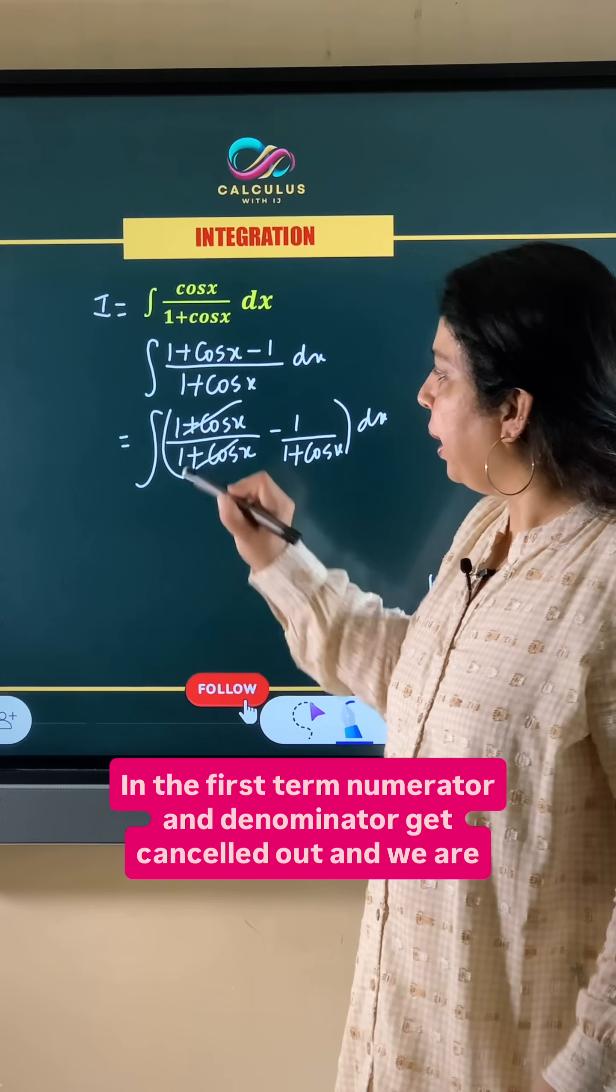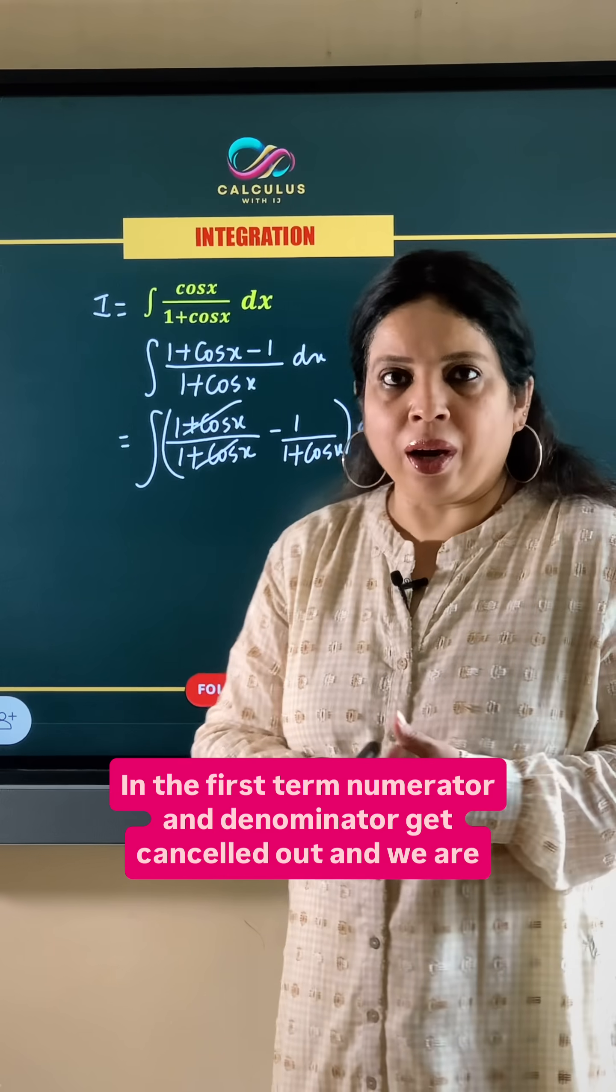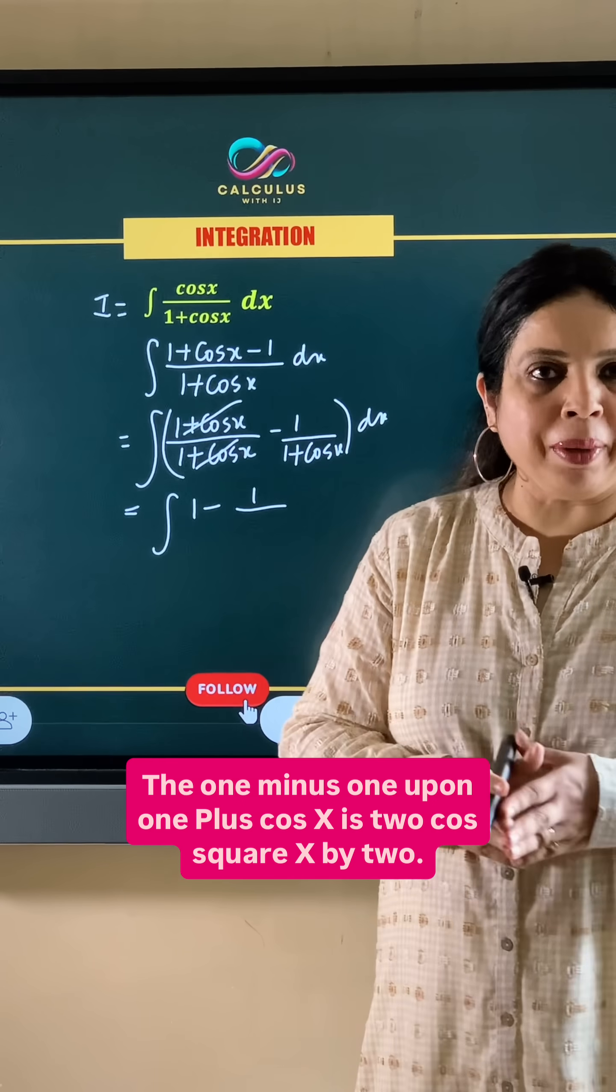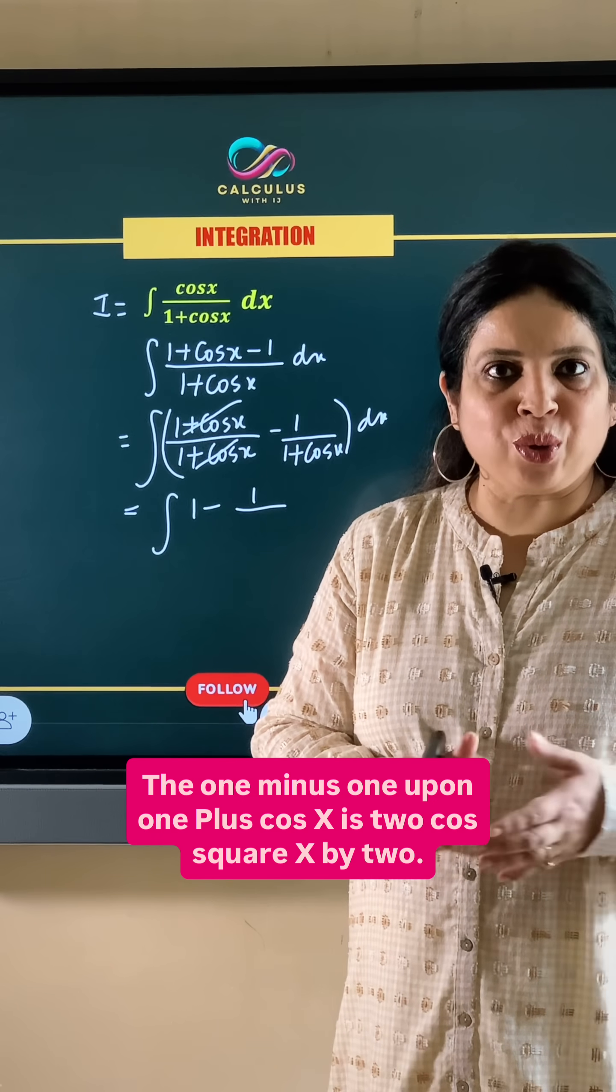In the first term numerator and denominator get cancelled out and we are left with 1. So 1 minus 1 upon 1 plus cos x is 2 cos square x by 2.